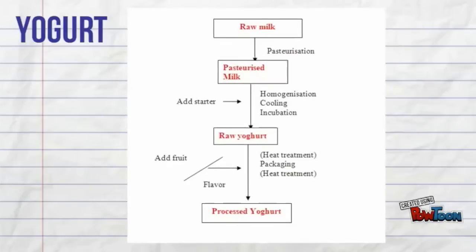In production of yogurt, raw milk is pasteurised and added with starter culture such as Lactobacillus bulgaricus and Streptococcus thermophilus. After that, they undergo homogenisation, cooling and incubation process.